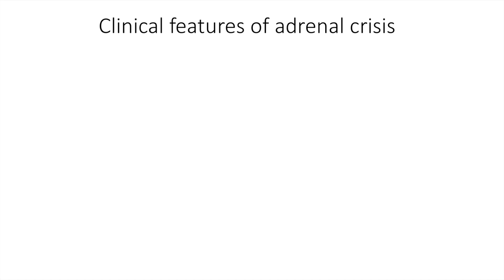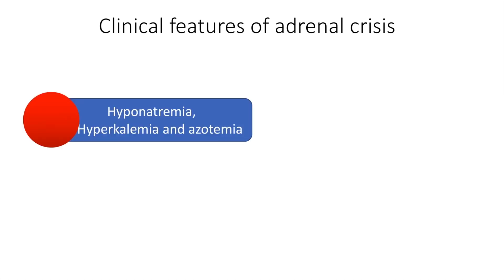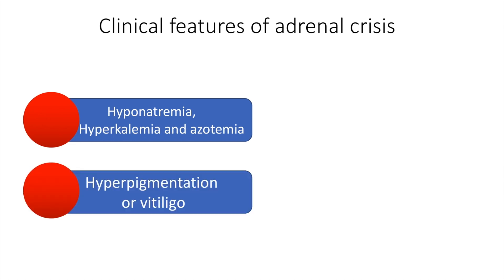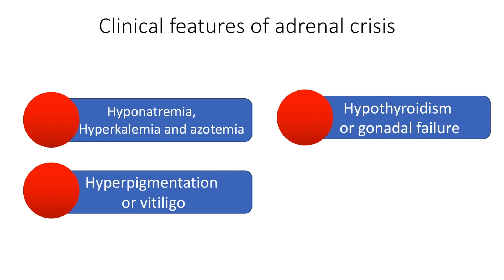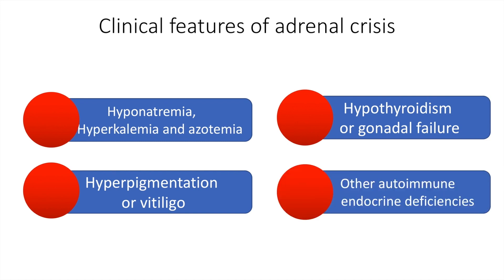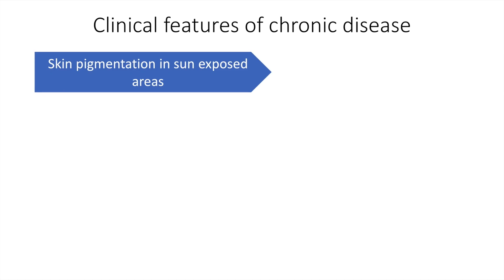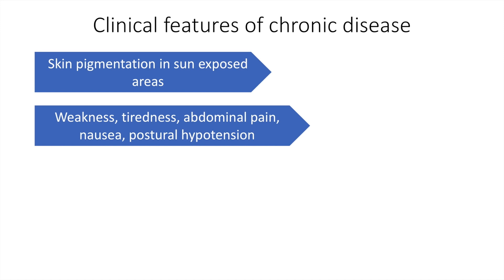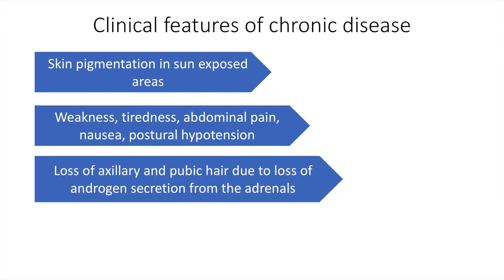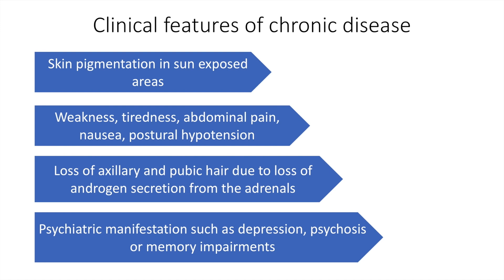Other clinical features of adrenal crisis include hyponatremia, hyperkalemia, azotemia, hyperpigmentation, vitiligo, and possibly hypothyroidism or gonadal failure along with other endocrine or autoimmune deficiencies. The clinical features of chronic adrenal insufficiency include skin pigmentation in sun-exposed areas, weakness, tiredness, abdominal pain, nausea, postural hypotension, loss of axillary and pubic hair due to loss of androgen secretion from the adrenals, and neuropsychiatric manifestations such as depression, psychosis, or memory impairment.